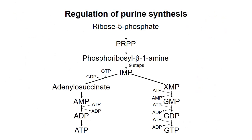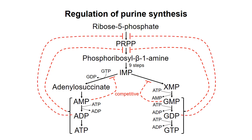If you remember the principles of metabolic regulation you learned previously, you should be able to predict the types of regulation that occur in purine biosynthesis. The first reaction in each branch of the pathway is competitively inhibited by AMP or GMP as appropriate. This regulation shunts IMP away from a branch if its nucleotide is accumulating. The early steps in the pathway are allosterically inhibited by the product nucleotides, as shown. Don't worry about how many phosphates are on the inhibitory nucleotides — just understand the basic principles of regulation.